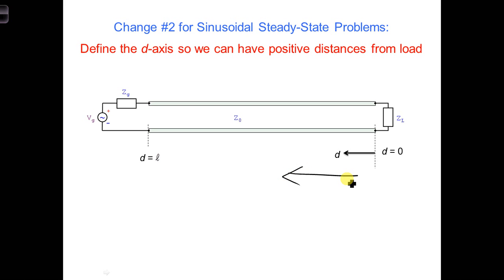To accomplish this, we will use the d-axis shown here when solving sinusoidal steady-state problems. For time domain problems, we'll still use the z-axis with the origin at the generator. As we've defined the d-axis here, d is equal to minus z, helping us to get rid of that extra minus sign.